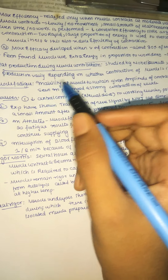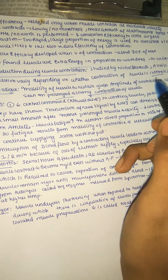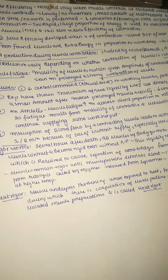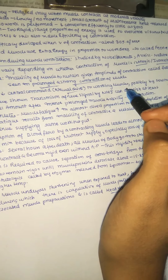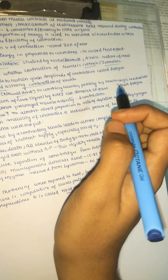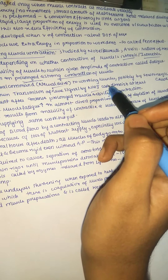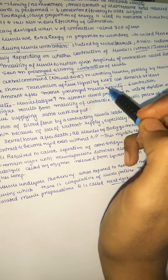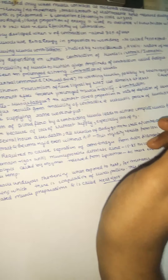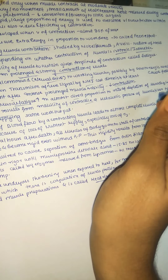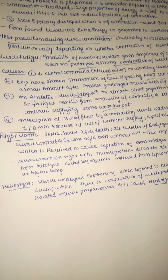Muscle fatigue is the inability of a muscle to sustain a given amplitude of contraction. It is mainly seen in prolonged and strong contraction of muscle. Causes include decreased central neural drive to the working muscle, possibly via serotonergic mechanisms, and diminished transmission at the neuromuscular junction after intense prolonged activity. In athletes, muscle fatigue is in almost direct proportion to the rate of depletion of muscle glycogen.